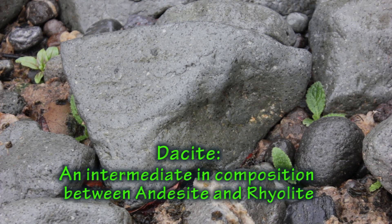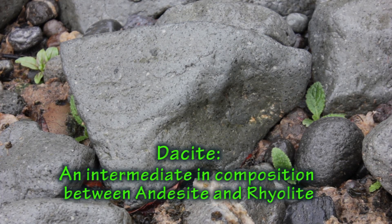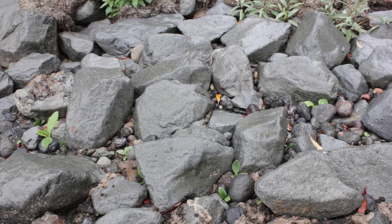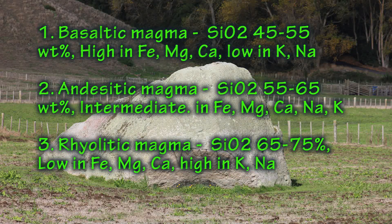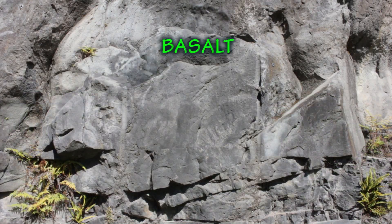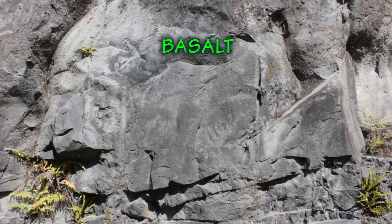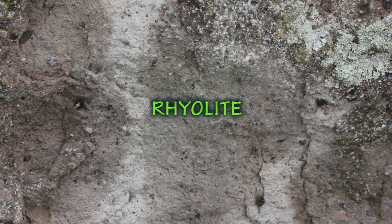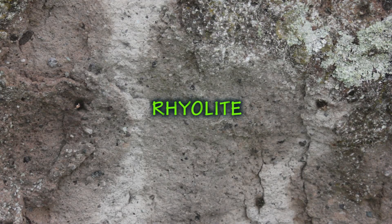whether that be ash, rocks or lava bodies. Types of magma are determined by the chemical composition of the magma. Three general types are recognised: basaltic magma, andesitic magma, and rhyolitic magma.